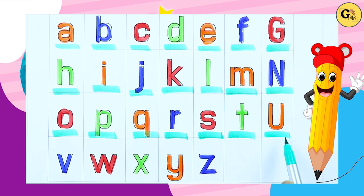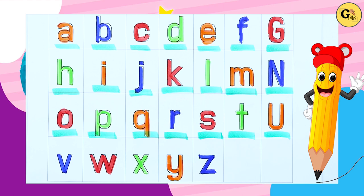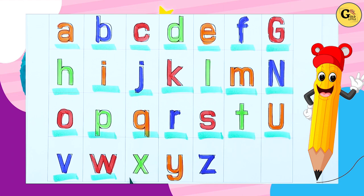U, U for umbrella. V, V for violin. W, W for watch.